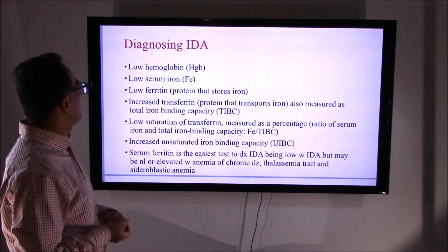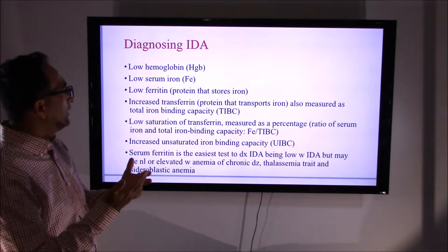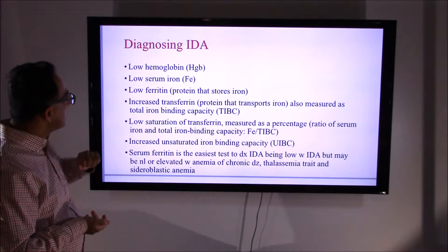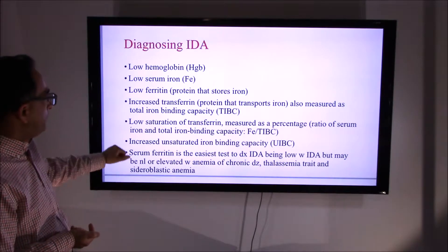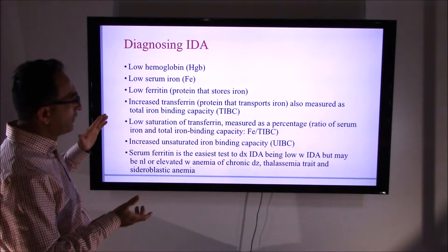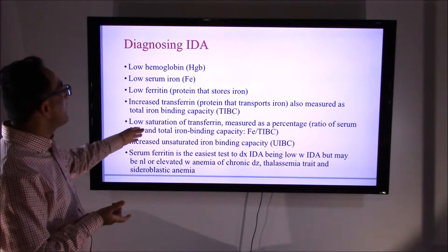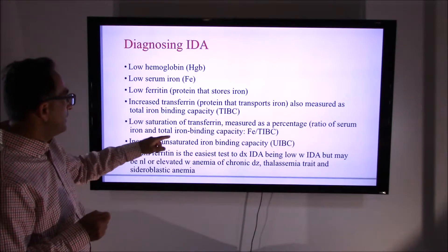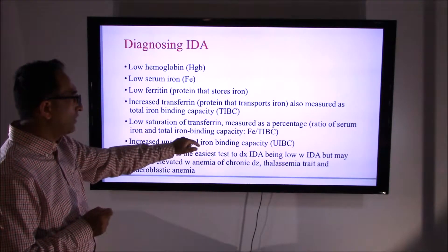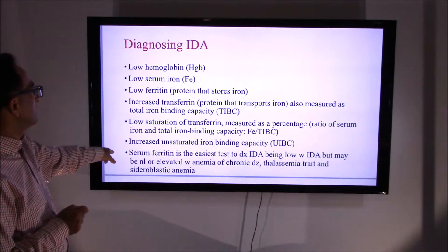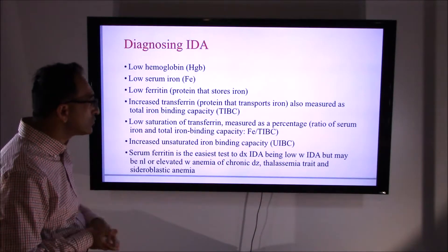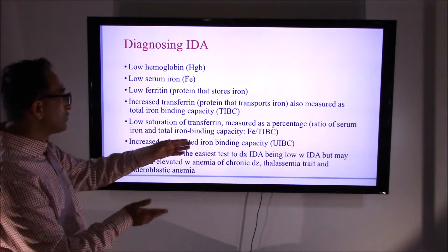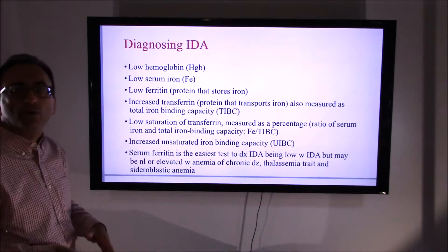To diagnose iron deficiency anemia, look for trends in the medical records: low hemoglobin, low serum iron, and low ferritin. There will also be increased transferrin — the protein that transports iron — measured as total iron binding capacity (TIBC). The quickest and most reliable test to confirm iron deficiency anemia is serum ferritin, which is low in iron deficiency but may be normal or even elevated in other types of anemia.